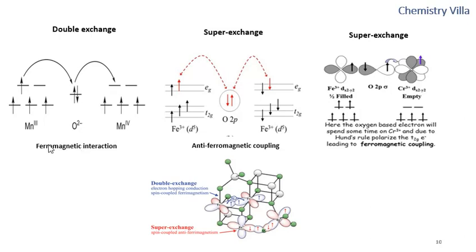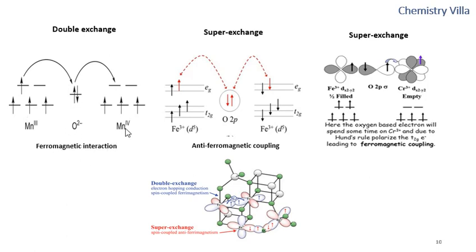We can see that between Mn3+ and Mn4+ there is ferromagnetic interaction, because the spins come here and the spins go here, but there is no change in the orientation of spins — they are in the same direction. This means there is ferromagnetic interaction between these two ions. Double exchange interaction is always ferromagnetic in nature, and the condition is that both interacting metal ions should not have the same oxidation state.